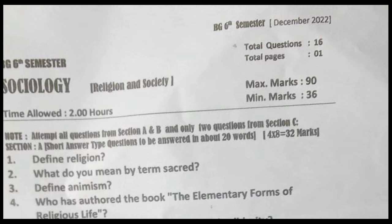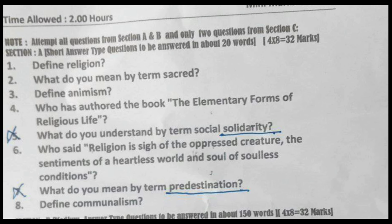Section A: short answer type questions to be answered in about 20 words. 4 into 8 equals 32 marks. Question 1: define religion. Question 2: what do you mean by the term sacred? Question 3: define animism. Question 4: who has authored the book 'The Elementary Forms of Religious Life'? — Émile Durkheim.